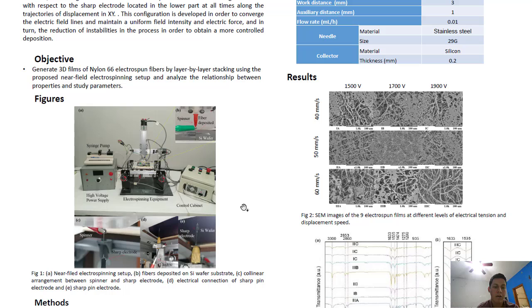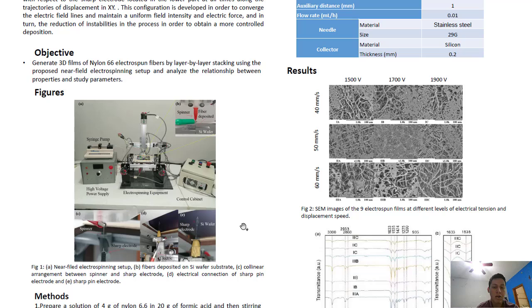In the proposed experimental configuration, the spinner and the sharp electrode are arranged collinearly, one above the other, respectively.